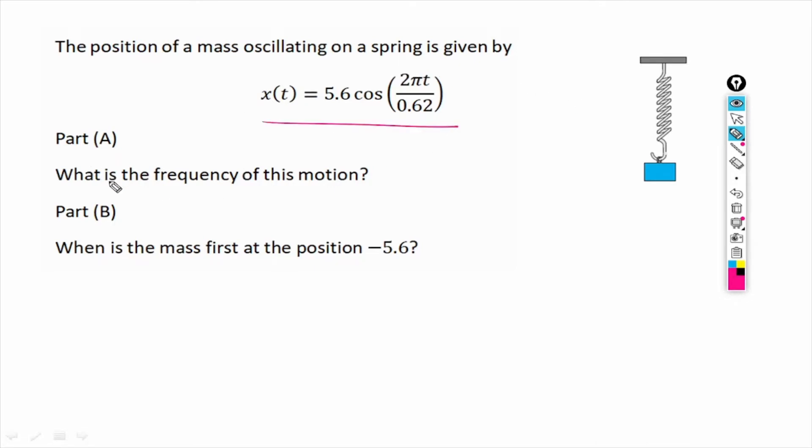So in part A, we have to find what is the frequency of this motion. To find the frequency, we can compare this given equation with the general equation of the oscillating motion, which is this.